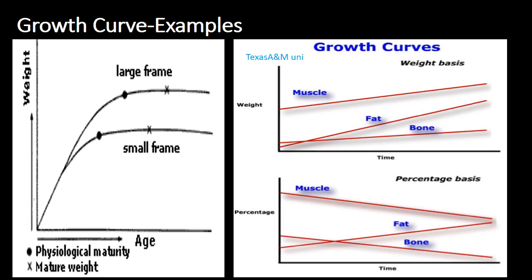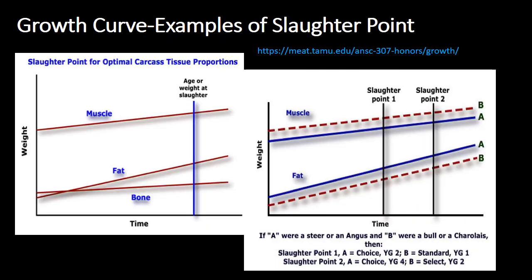From growth curves, publications generally recommend about 20–25% body fat and about 65% muscle as the appropriate age and weight for marketing beef animals. When muscle growth is at 65% and fat is around 23% on average, that is the best time to market the animal.